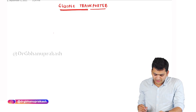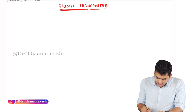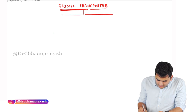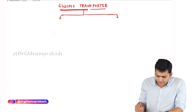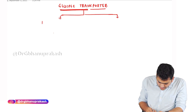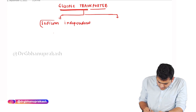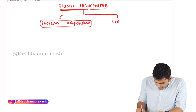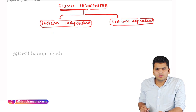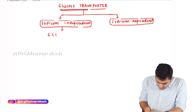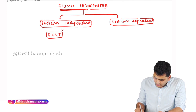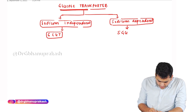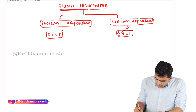Welcome. In this session we are going to discuss about glucose transporters. Glucose transport is basically divided into two types depending on whether it requires sodium or not. One is called the sodium independent glucose transporter, written as GLUT, and the other is the sodium dependent glucose transporter, written as SGLT.